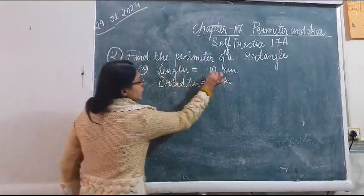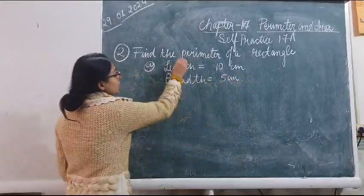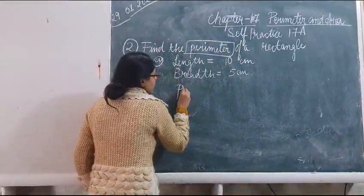First, length is given 10 cm and breadth is given 5 cm. You have to find the perimeter. Perimeter of a rectangle, first we will write the formula.